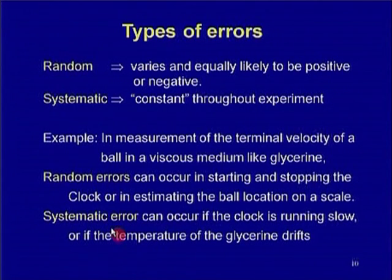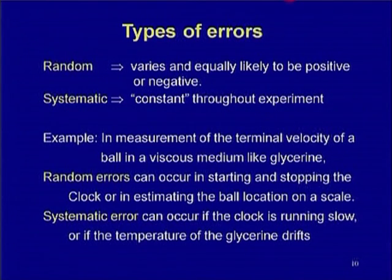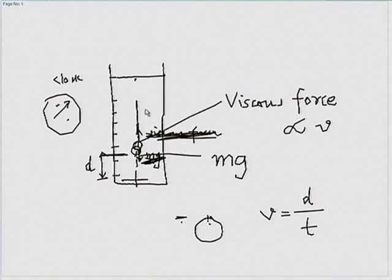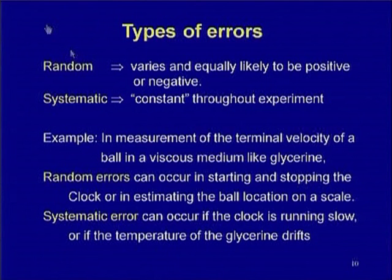A source of systematic error in this experiment: if your clock is running slow, you will systematically record a shorter time duration. For example, 20 seconds elapsed may only show as 18 seconds. Another systematic error is the rise in temperature of the glycerine fluid as you drop multiple balls repeatedly — friction causes heating, so the temperature keeps always increasing throughout the experiment. This is systematic because it is not random; it always trends upward.